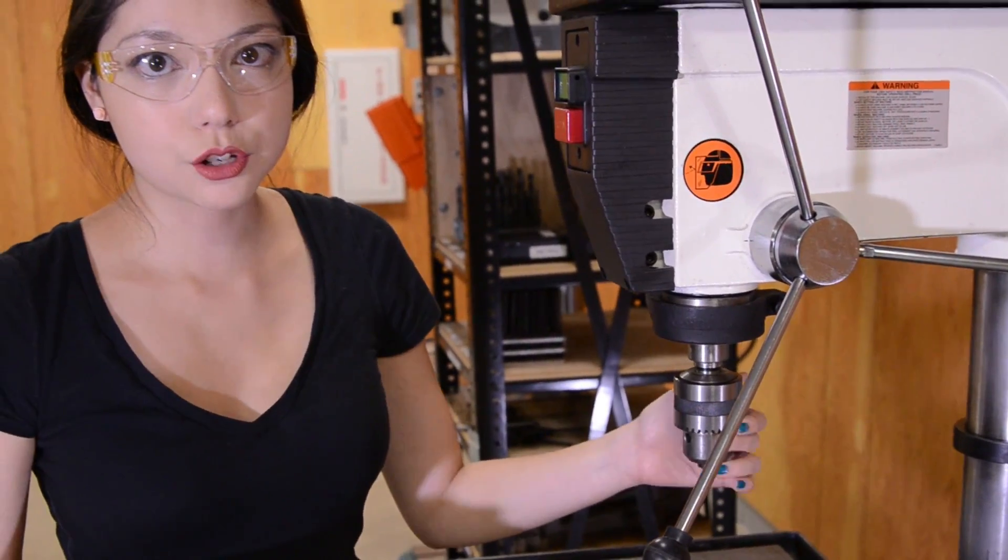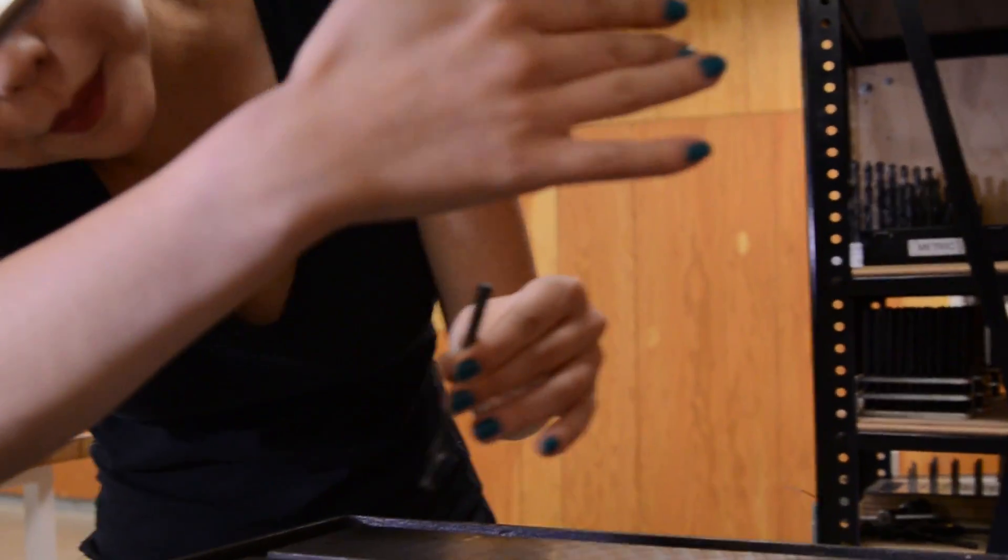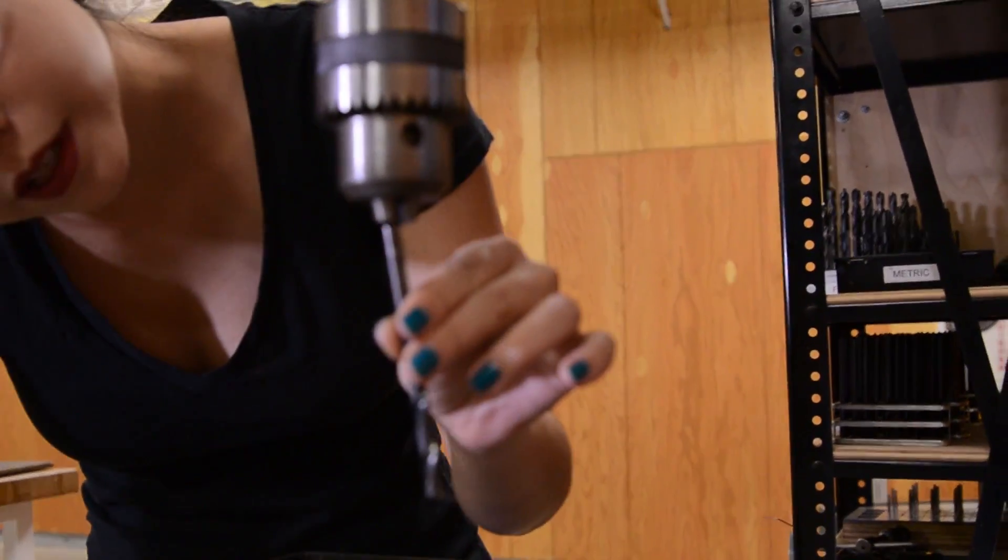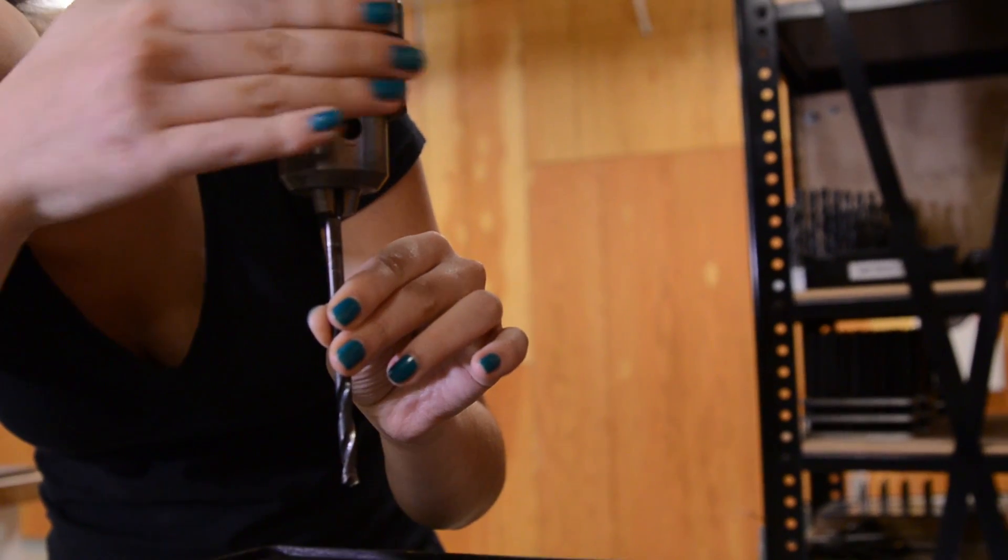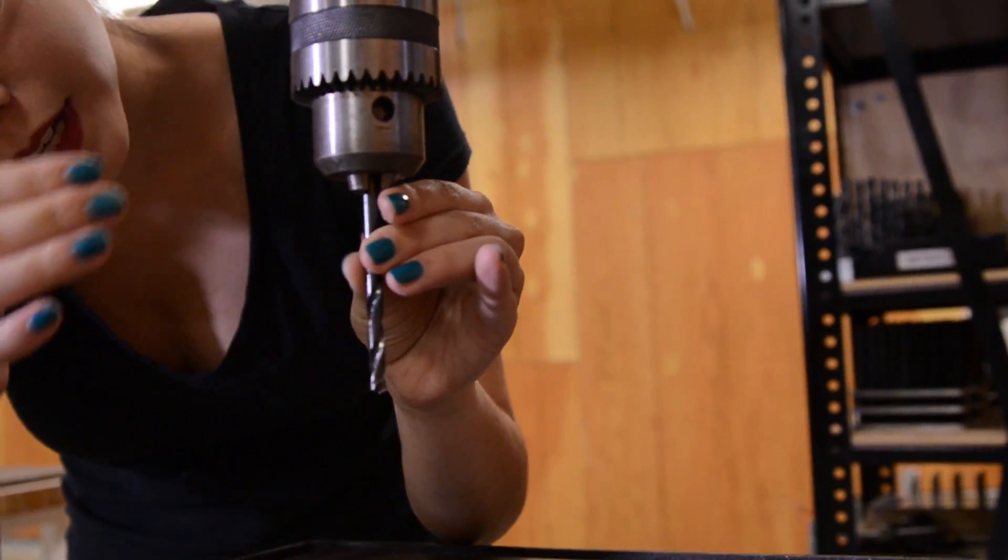Alright, so to put a drill bit into this, if you're new to this, I actually find the easiest way to do it is you make it so it's a little bit too small, and then you widen it until it slips in. So you don't end up with something like this.